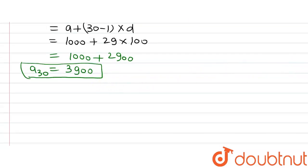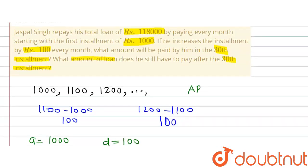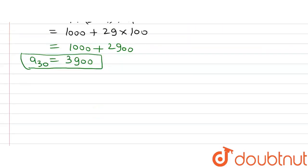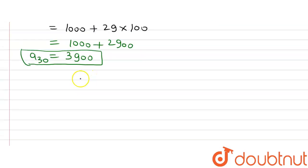Now for the second part of the question, we are asked how much he still has to pay after the 30th installment. We need to find the total amount paid in the first 30 installments, then subtract that from the total loan. So first let us find the sum of the first 30 installments, where N = 30.